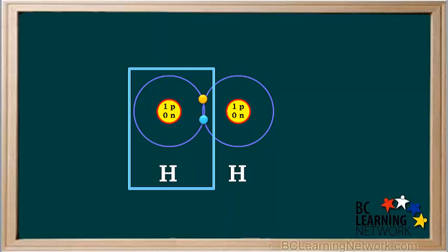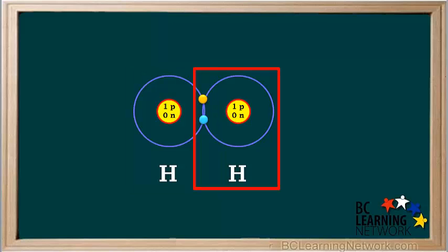The hydrogen atom on the left now feels like it has two electrons, so it has the same electron arrangement as an atom of the noble gas helium. Therefore, it is stable.